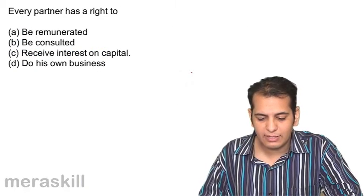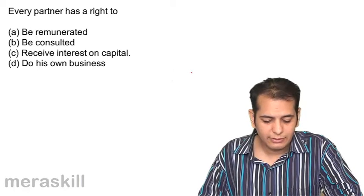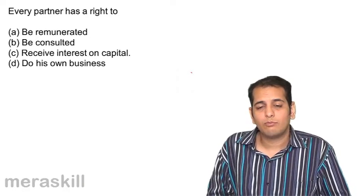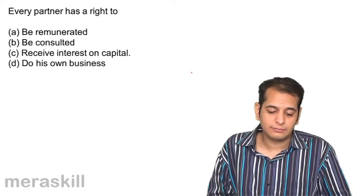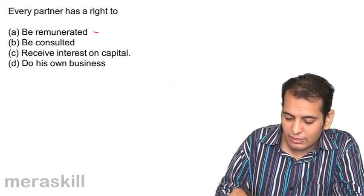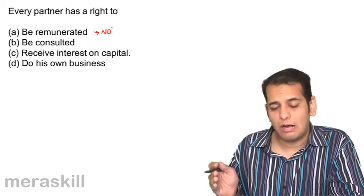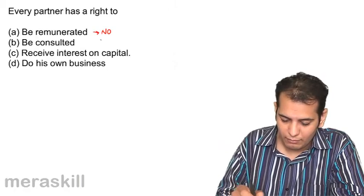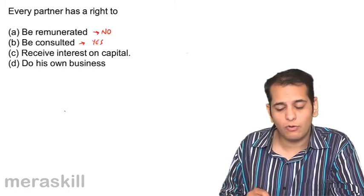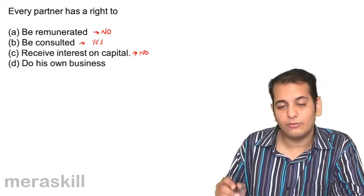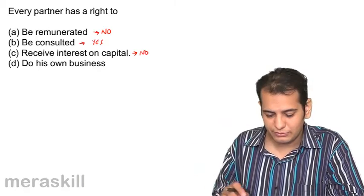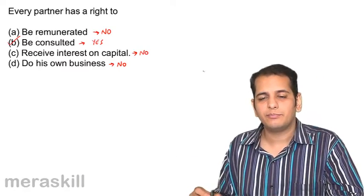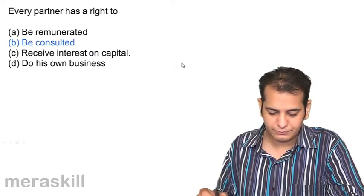Every partner has a right to: a) be remunerated, b) be consulted, c) receive interest on capital, d) do his own business. Remuneration is not a prima facie right — only if agreed upon in the partnership deed. Interest on capital is only allowed if mentioned in the deed and the firm has profits. A partner cannot do his own business. The answer is the right to be consulted.